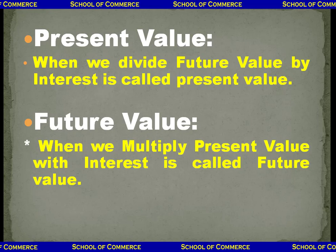We have to calculate present value and future value in this chapter. Present value is when we divide future value by interest. What is interest? Interest is the extra money we get from our investment. If you invest 100 and get 110, the extra 10 taka is the interest. Because of interest, present value and future value are segregated.